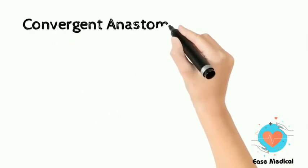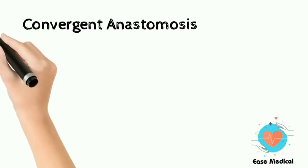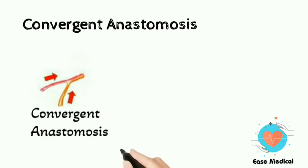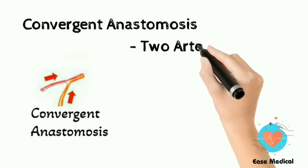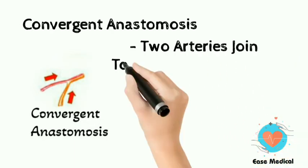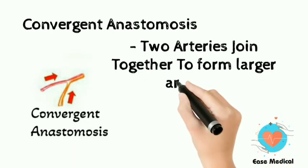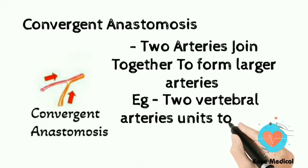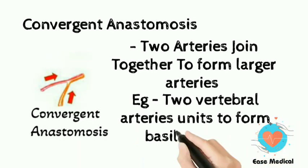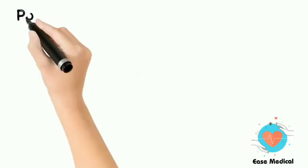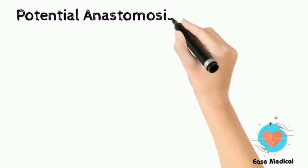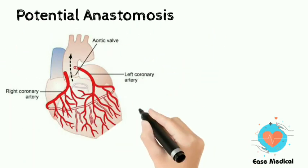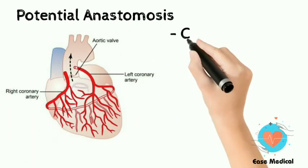Convergent anastomosis is when two arteries join together to form a larger artery; for example, two vertebral arteries unite to form the basilar artery. Potential anastomosis is a communication established by union of terminal arterioles.